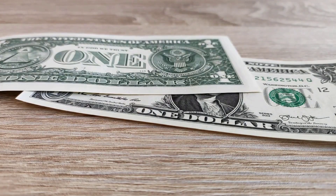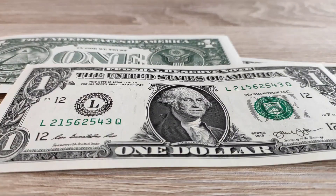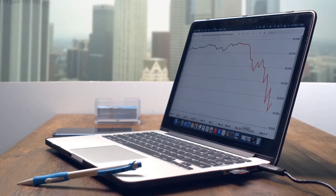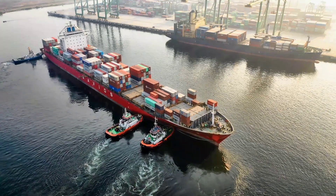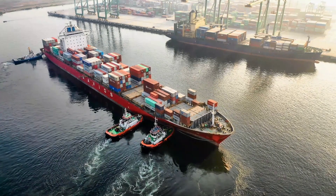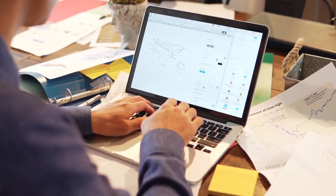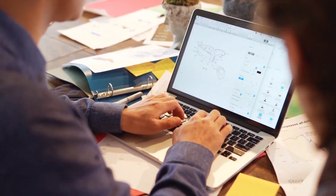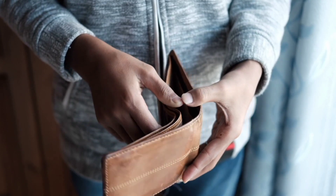But why? The revenue should have been maximum at 100% tax rate, which is quite obvious arithmetically. However, if we look deep into the economic consequences of higher tax rates, especially when it's 100%, the economic incentive to work and invest gets reduced. And so it makes sense as to why there is no revenue earned at 100%.